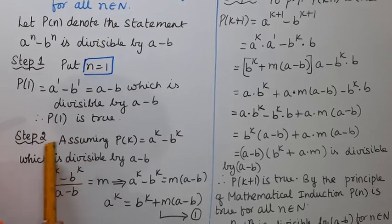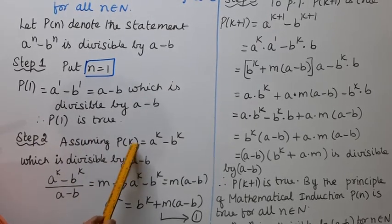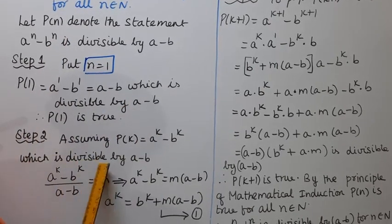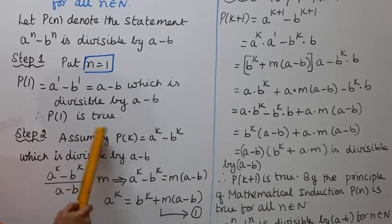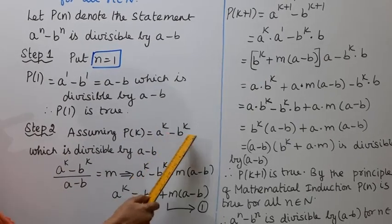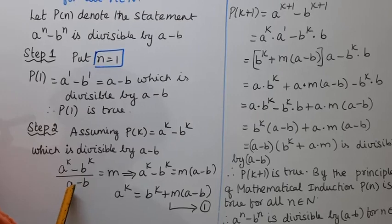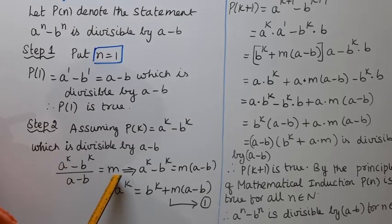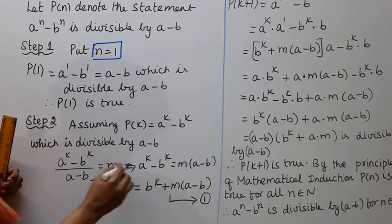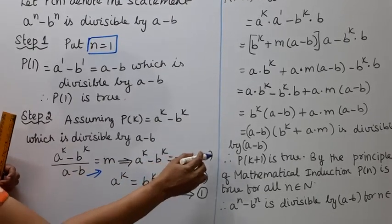Step 2: Assume P of k is true. That is, a power k minus b power k is divisible by a minus b. We assume this is equal to m times a minus b. So a power k minus b power k equals m times bracket a minus b.